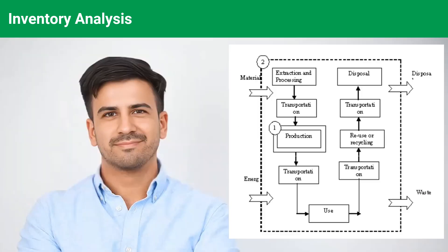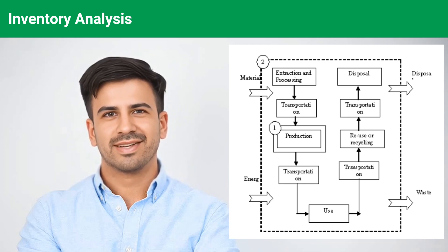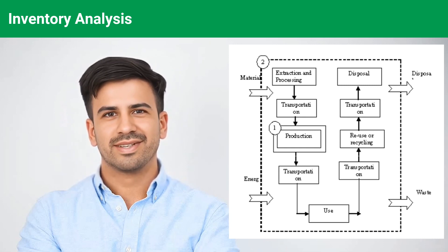The next phase of an LCA is the Inventory Analysis. It starts with the construction of the Life Cycle Flow Chart and the collection of data for all relevant inputs — energy and material — and outputs — emissions and wastes — along the Life Cycle. These data are then set in relation to the functional unit defined in the Goal and Scope Definition.